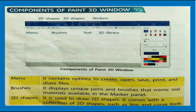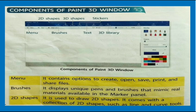Components of the Paint 3D window: You can see the components in the image — Menu, 2D Shapes, 3D Shapes, Stickers, Brushes, Text, and 3D Library. The Menu contains options to create, open, save, print, and share files. Brushes displays unique pens and brushes that mimic real materials, available in the marker panel. 2D Shapes is used to draw 2D shapes and comes with a collection of 2D shapes and 3D shapes such as line and curve tools.